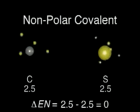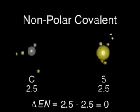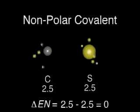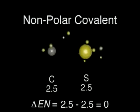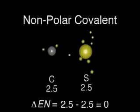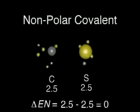When bonding atoms have nearly equal electronegativities, neither can attract electrons away from the other. In a carbon-sulfur bond, the electron pair is shared almost equally between the two atoms, resulting in a covalent bond.